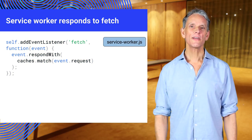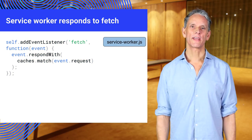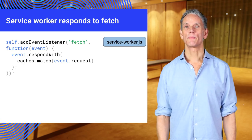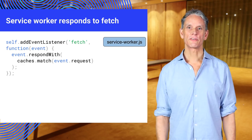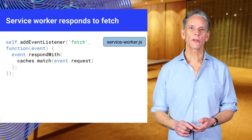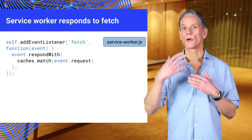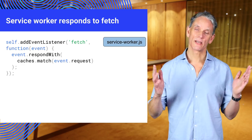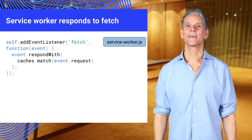A fetch event is fired every time a resource is requested. In this example, we listen for the fetch event and instead of going to the network, return the requested resource from the cache, assuming it is there.